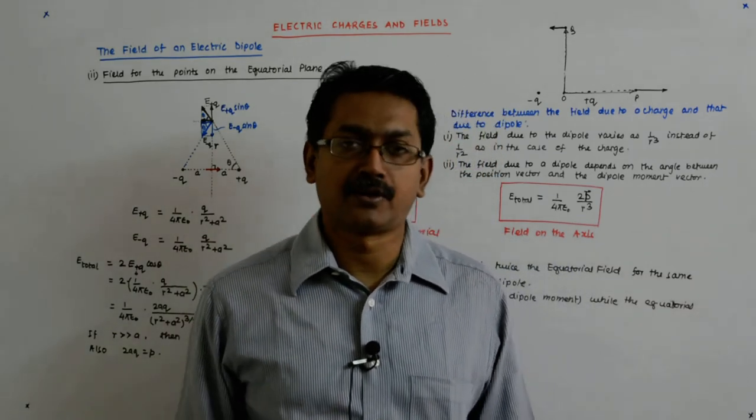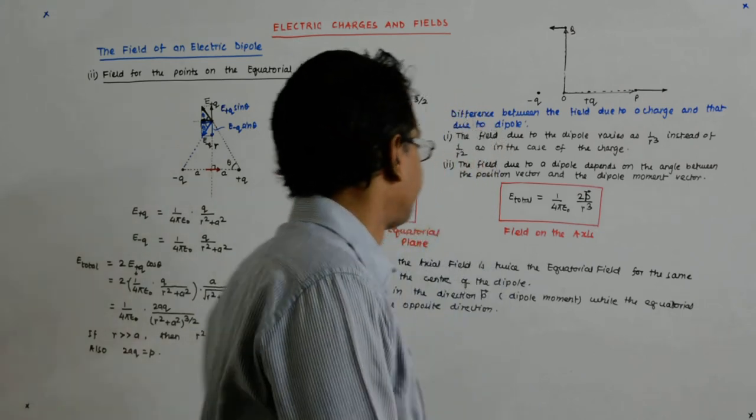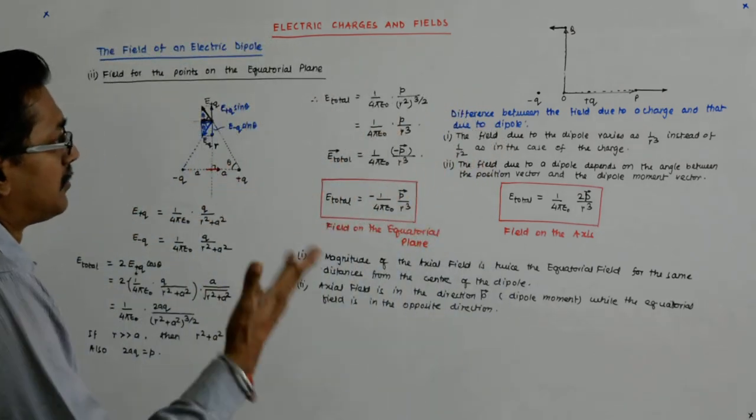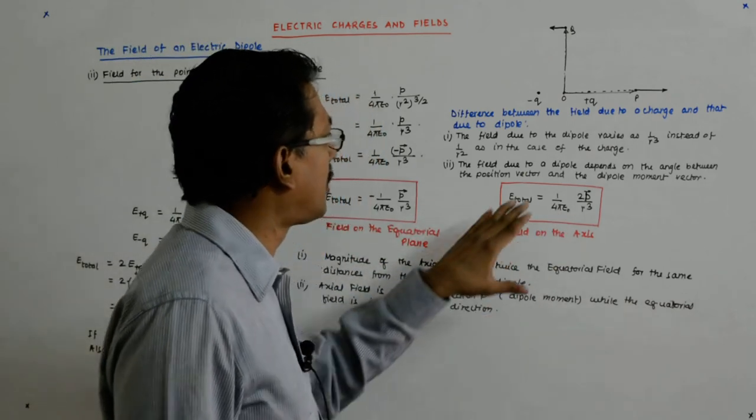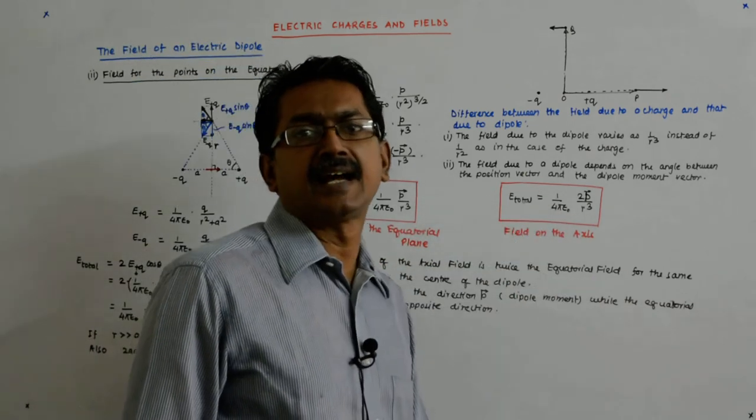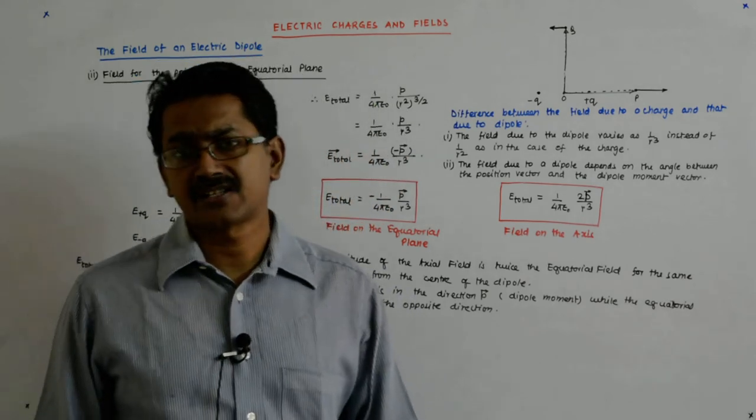So it depends on what angle your position vector makes with the dipole moment vector. That becomes important. So that is the point of difference between the dipoles and the charge. The field of a dipole falls more sharply than that due to the charge.